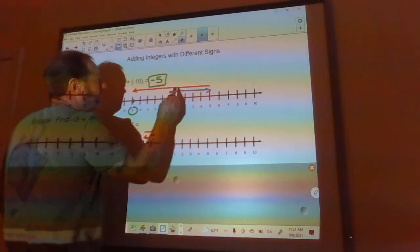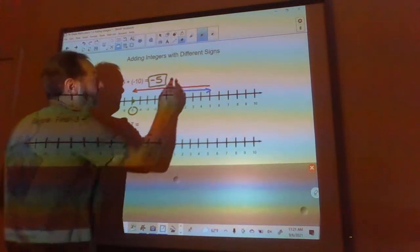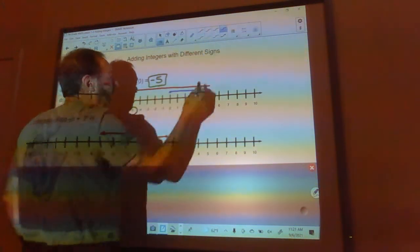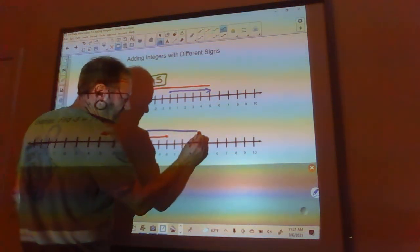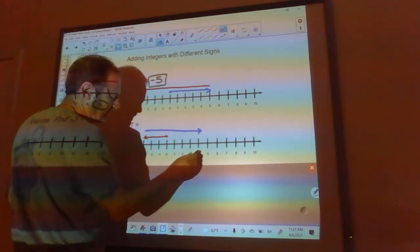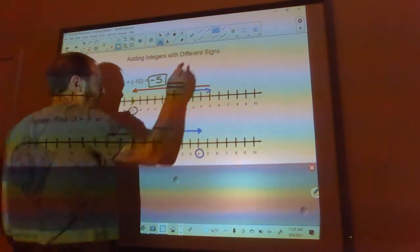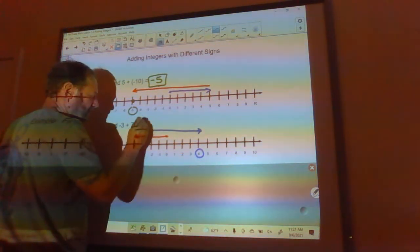Oops, it's supposed to be blue. So we go 1, 2, 3, 4, 5, 6, 7. We end up right here at 4. So the answer to this is 4.